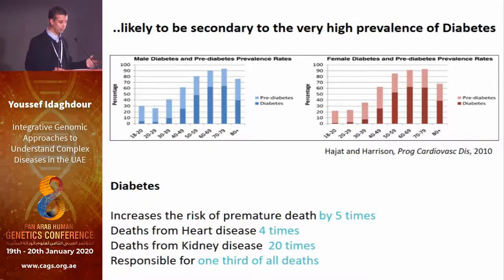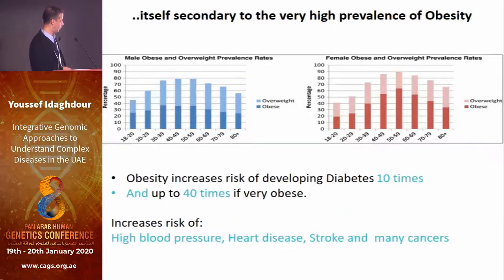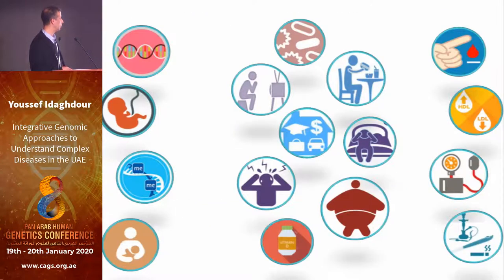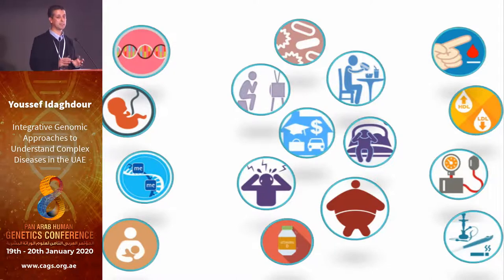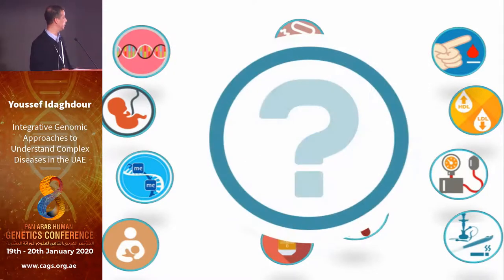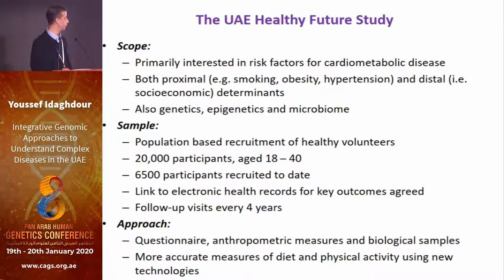Diabetes is a big problem because it causes a lot of downstream issues, as we know. Obesity is related as a risk factor for diabetes. The question is why — what's happening here in the UAE population and as well as in the region? We know those diseases are very complex. They are the product of the environment and genes, and our study is designed to be able to study those questions.